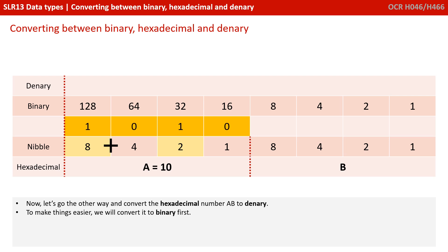We'll start with the left-hand hexadecimal digit first, which is A, and we know it needs to turn into one nibble — four bits. A represents 10, so that's an 8 and a 2. We've got a 1 in the 8 column, followed by a 0, followed by a 1 in the 2 column, followed by a 0. 8 and 2 is 10, or A in hex.